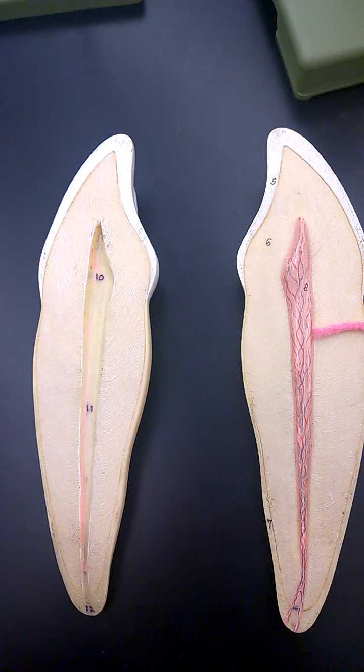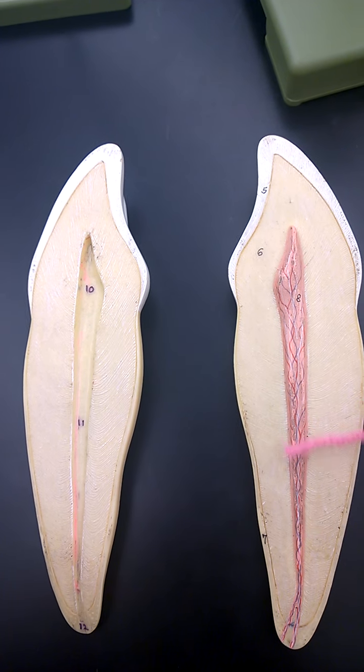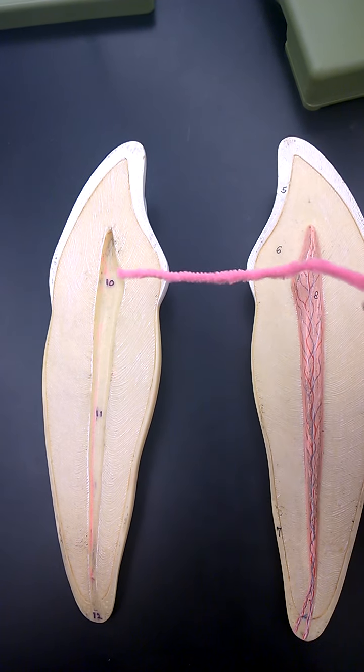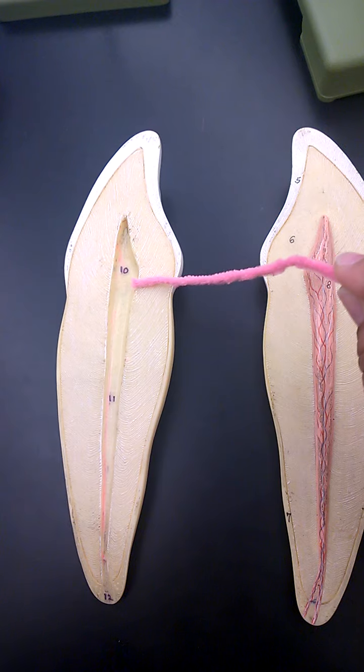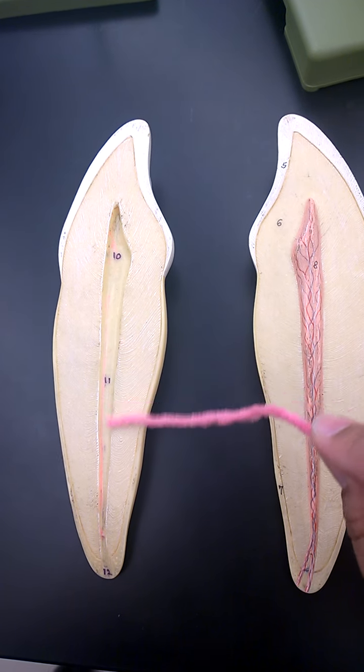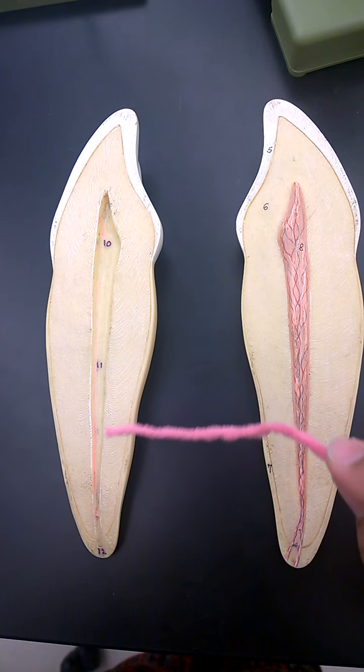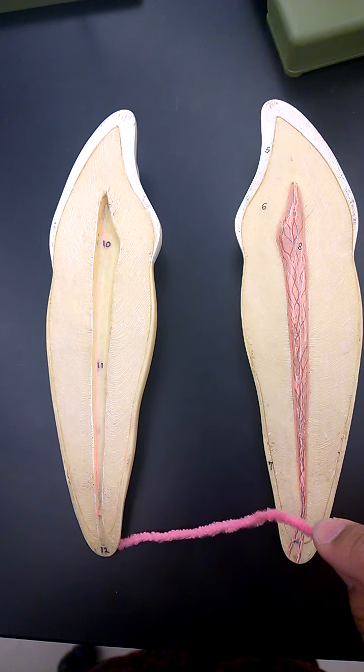The dental pulp in the root canal would be right over here. The pulp cavity would be number 10. And the root canal would be number 11. And number 12 is the apical foramen.